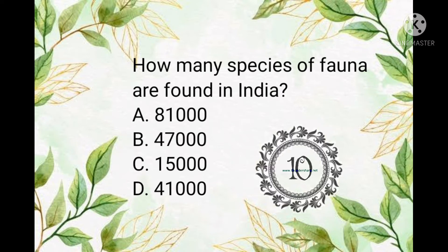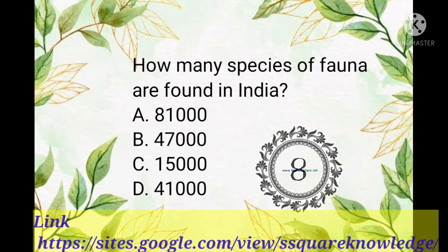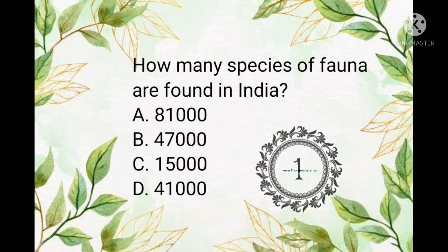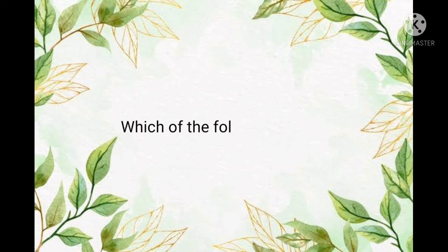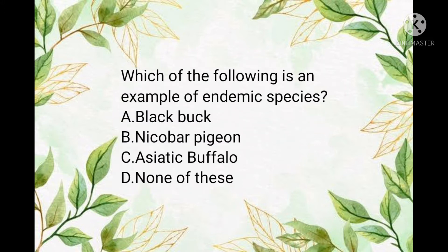Question number six: how many species of fauna are found in India? To get the questions of this quiz in PDF form, please visit our website — you will find the link in the description box. The answer is 81,000.